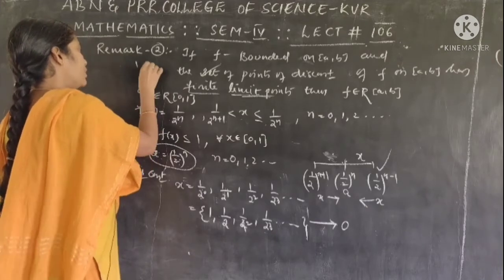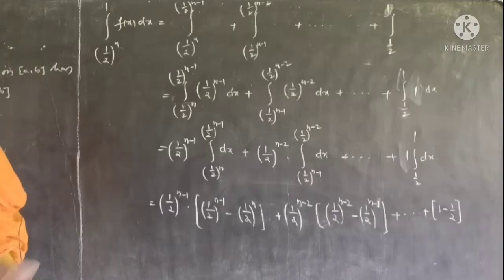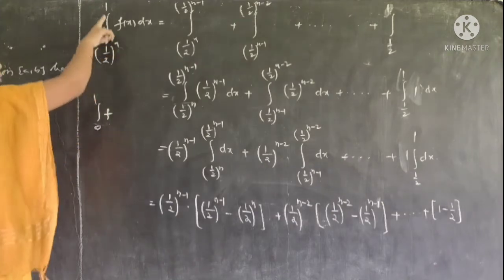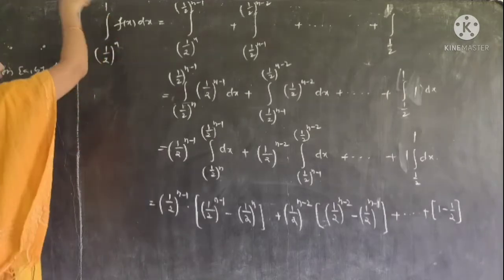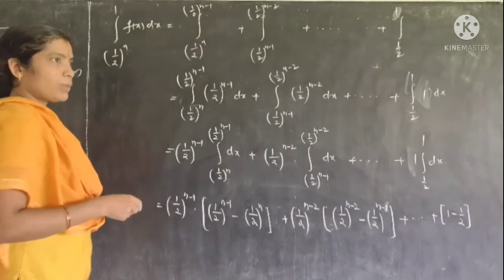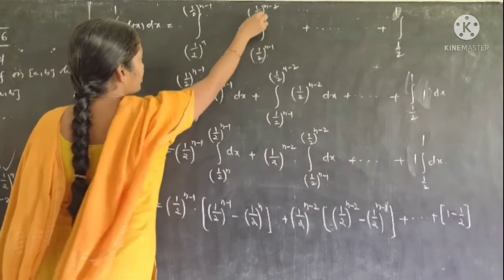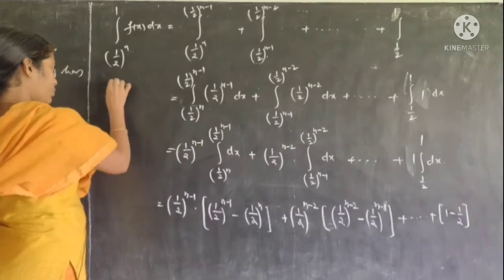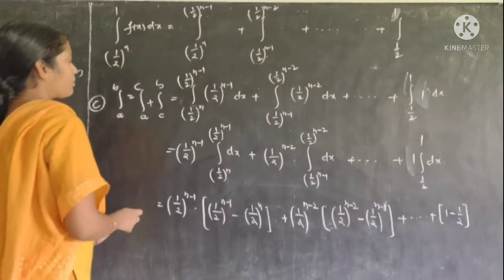Therefore, the integral from 0 to 1 of f exists. The integral value exists. To compute the integral from 0 to 1 of f, we split it at the discontinuous points. The integral from 1/2^n to 1 of f(x)dx splits into: integral from 1/2^n to 1/2^(n-1), plus integral from 1/2^(n-1) to 1/2^(n-2), and so on — applying the additive property of integrals.